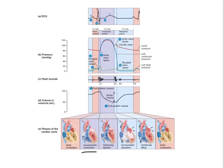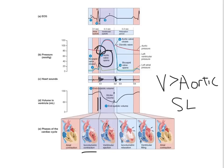The isovolumetric contraction phase is very short, because as the pressure in the ventricle increases due to systole, at a certain point the ventricular pressure exceeds the aortic pressure, and when that happens the semilunar valve opens. The aortic valve opens, and now we are in the stage of ventricular ejection, because blood in the ventricle is ejected into the aorta. You can see that the aortic pressure now starts to increase, and the ventricular volume starts to decrease as blood leaves the ventricle.